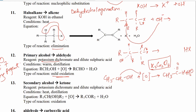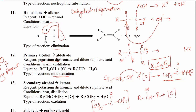If we have a secondary alcohol, it also goes through oxidation with K₂Cr₂O₇, but a ketone is found, not an aldehyde. The carbon attached to the OH group is further attached to two alkyl groups — that's why it's secondary alcohol. With atomic oxygen, both hydrogens on that carbon react to form H₂O, and a C=O double bond forms, giving a ketone.